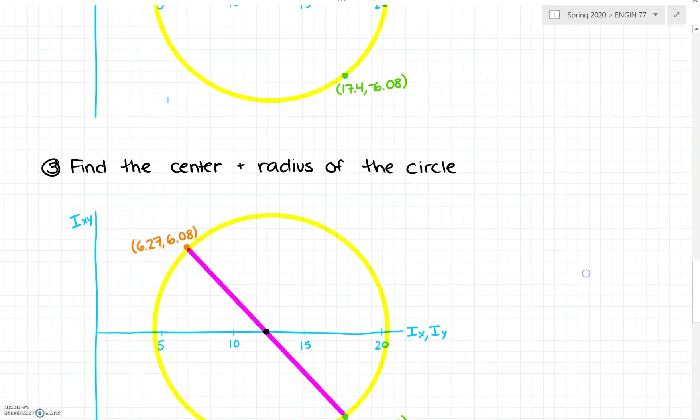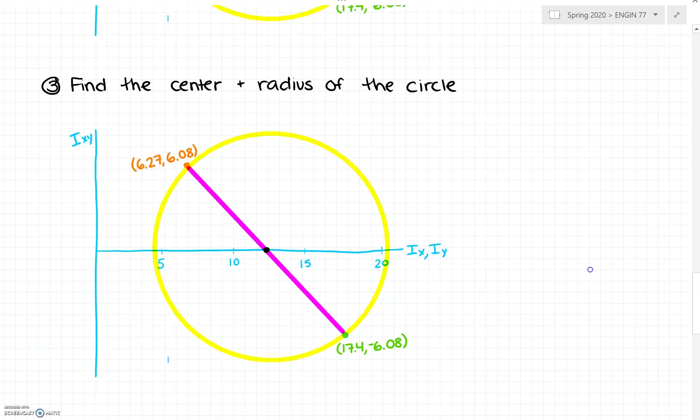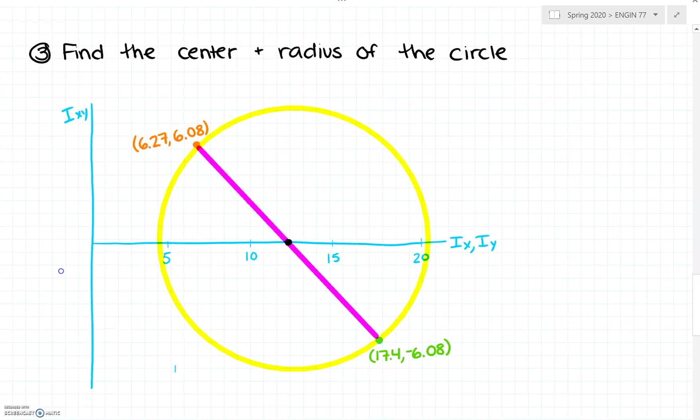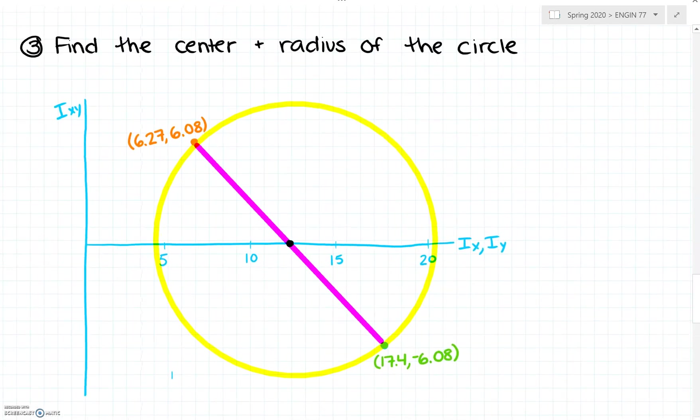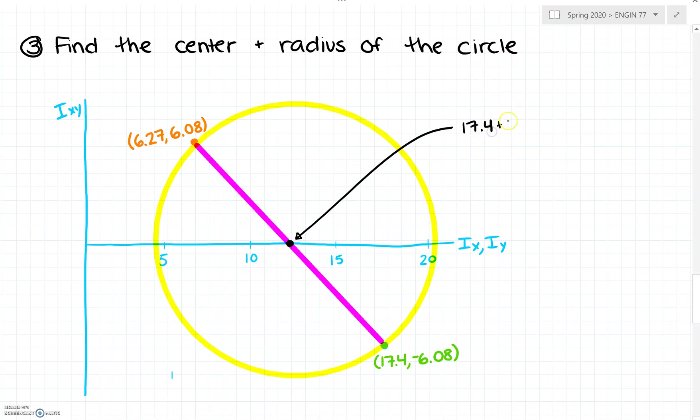We're going to draw this line connecting our two points and we're going to find the center and the radius of the circle. The center of that circle will be the average of our two x values, so the center is going to be 17.4 plus 6.27 divided by 2. That's 11.835.